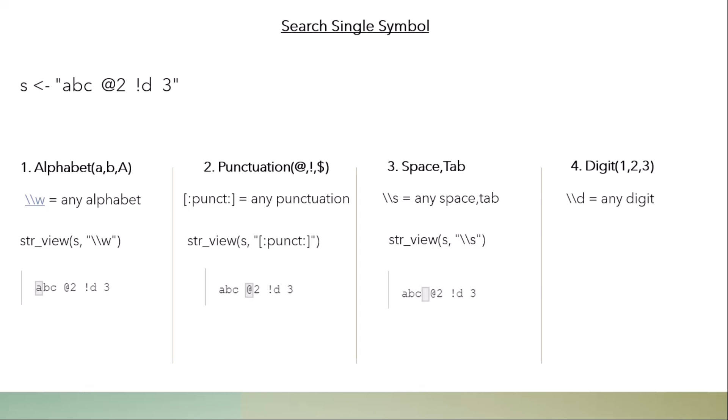For spaces and tabs, as you can see there are three spaces available — after C, after 2, and after D. Running this command returns the first space. Similarly for digits: there are two digits, 2 and 3, and running the command returns 2. Note that `str_view` does not extract values — it just visualizes things. To actually extract a value, you use `str_extract`.